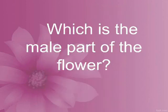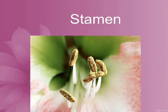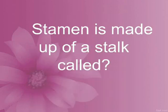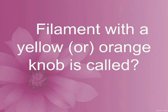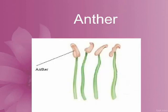Which is the male part of the flower? Stamen. Stamen is made up of a stalk called filament. The filament with a yellow or orange knob is called the anther.